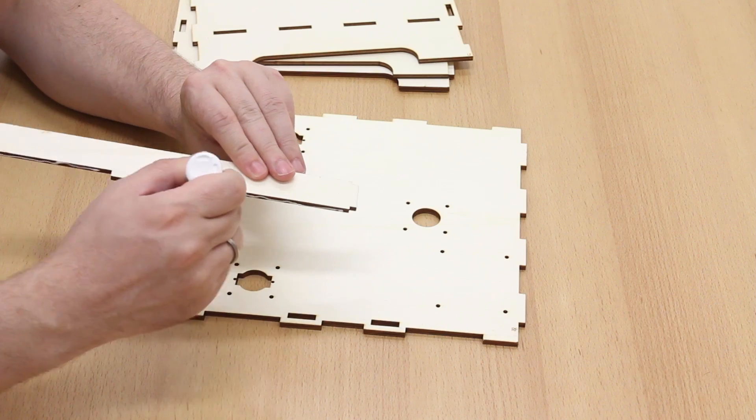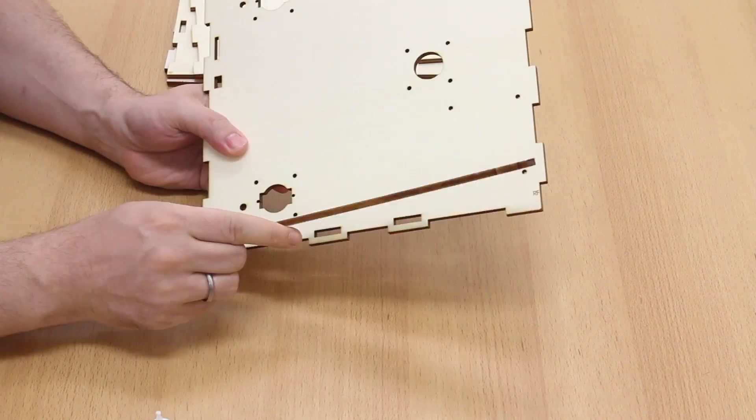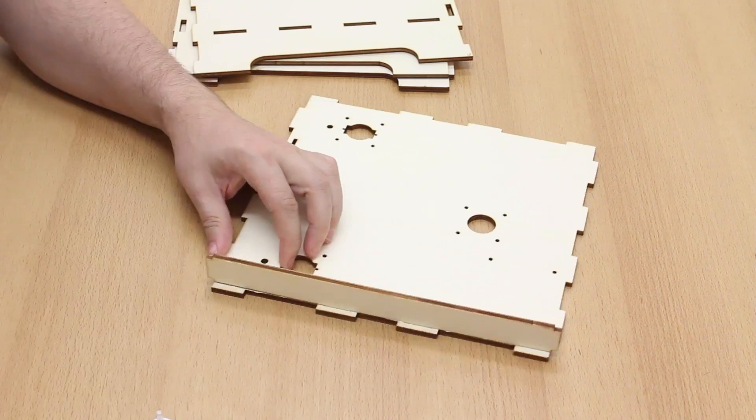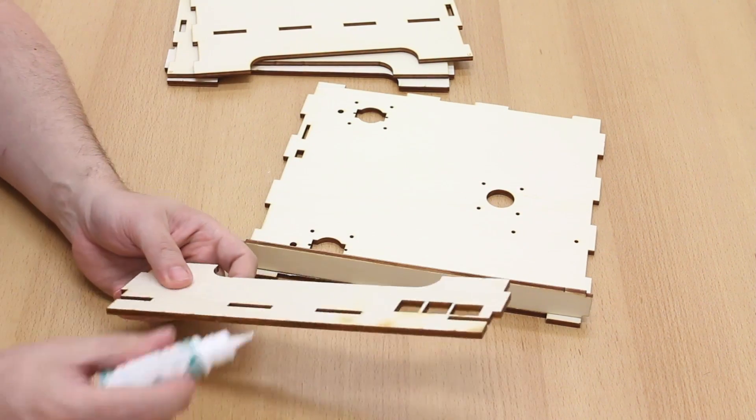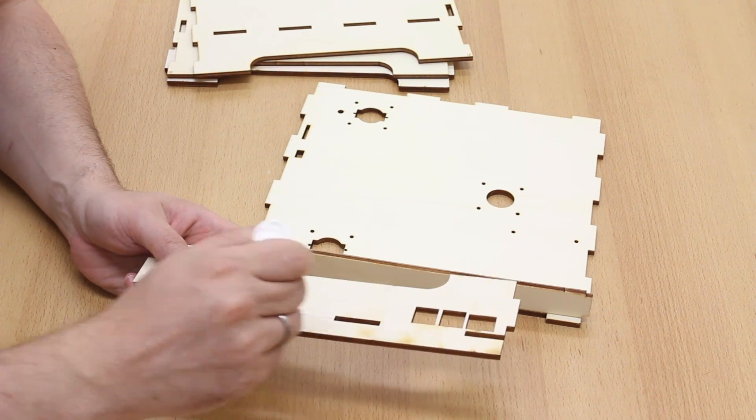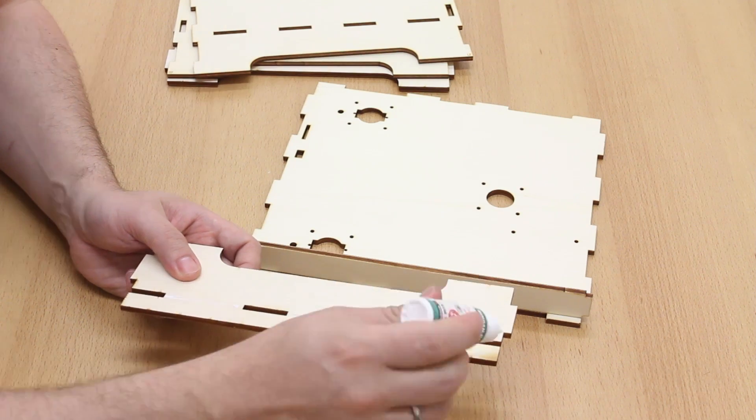So apply glue to the smallest piece. And add it to the base plate. Then we glue the front piece to the smallest piece.